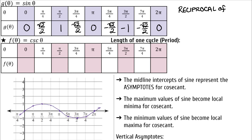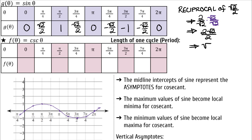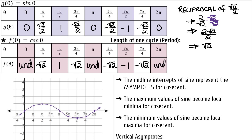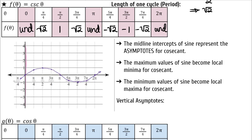Because cosecant is the reciprocal function of sine, we can just find the reciprocal of each sine value to complete the table for cosecant. Remember, the reciprocal of 0 is undefined. Now graph cosecant.